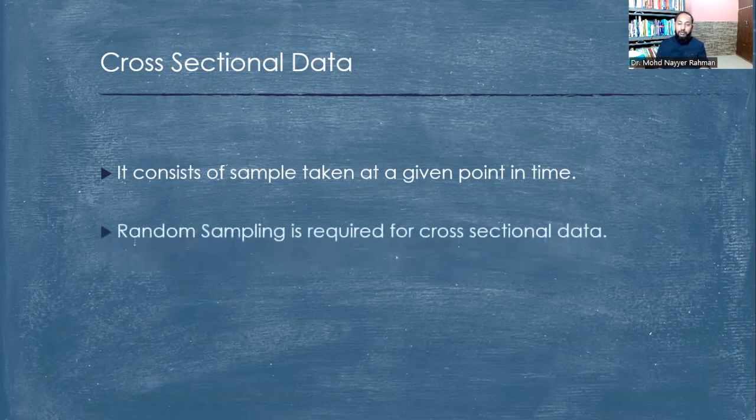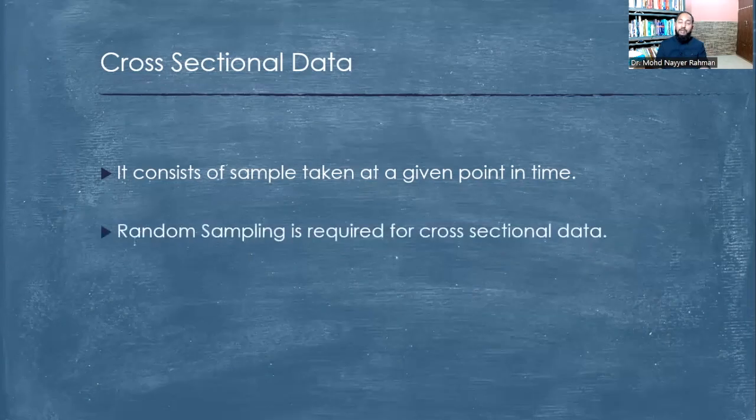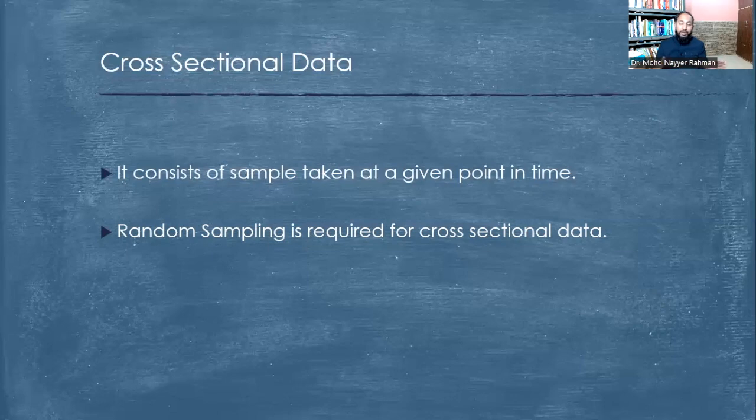Another important feature is that random sampling is required for cross-sectional data, though it's not compulsory and necessary. There can be some problems associated with random sampling - it may not be possible sometimes due to cost and time constraints. But generally speaking, random sampling generates cross-sectional data. The benefit of cross-sectional data is that at a given point in time, we know what the situation is.